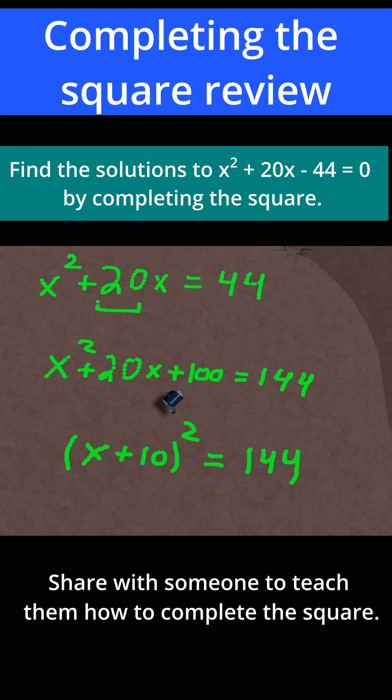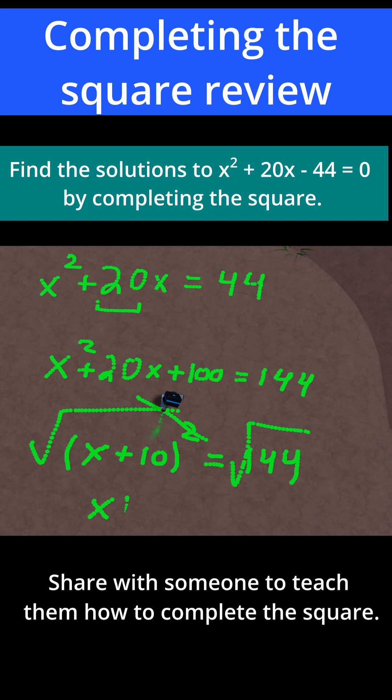Take the square root of both sides now, and you're going to have x plus 10 is equal to plus or minus the square root of 144, which is just 12.